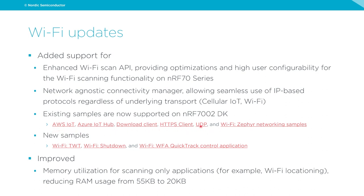We added support for NRF7002DK on some existing NRF Connect SDK samples, and a selection of Ethernet working samples are also now supported by the NRF7002DK. New samples include Wi-Fi TWT (Target Wake Time — a Wi-Fi 6 feature for lower power by allowing stations to sleep longer), the Wi-Fi shutdown sample, and the Wi-Fi WFA Quick Track control application for Wi-Fi Alliance certification. We have also made significant memory improvements for scanning-only applications like Wi-Fi locationing, reducing RAM usage from 55 KB to 20 KB.